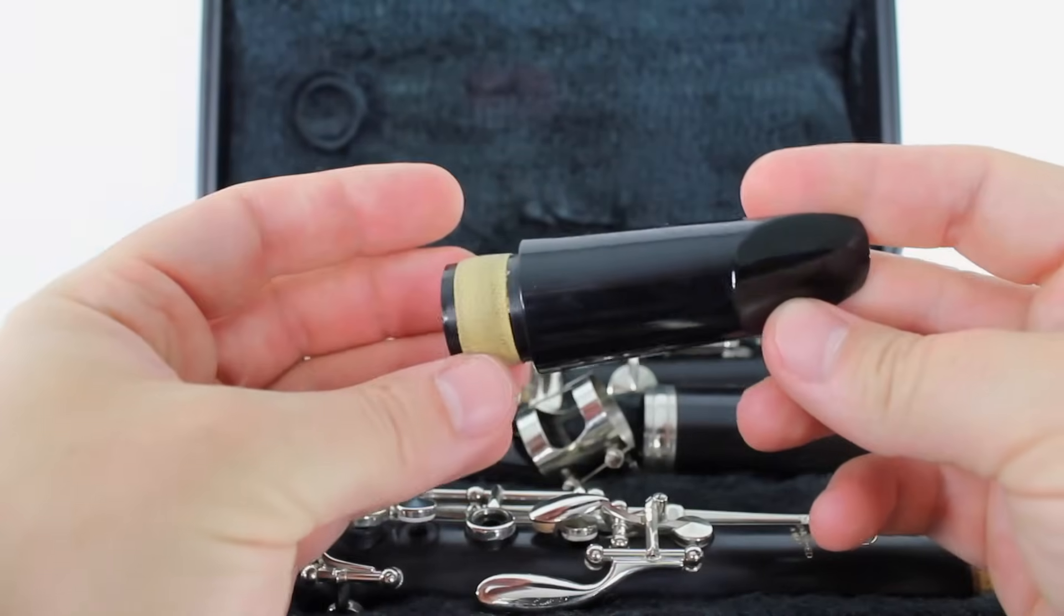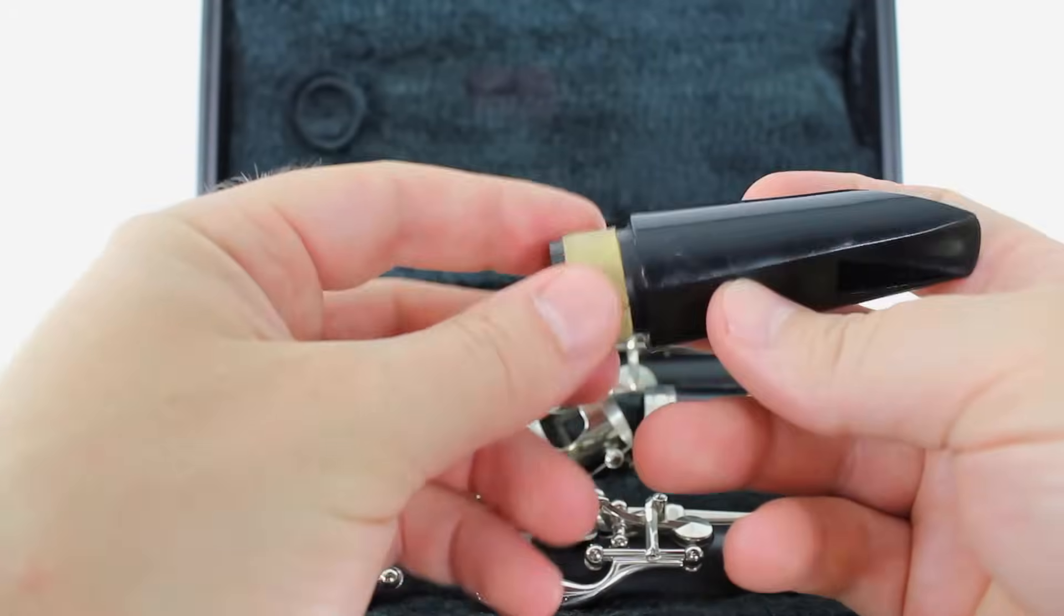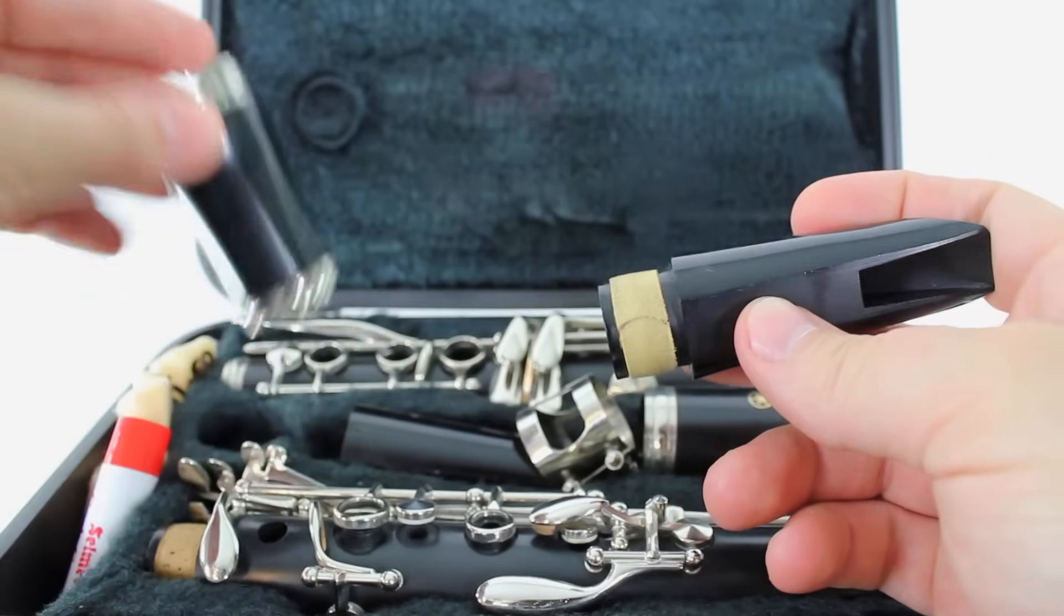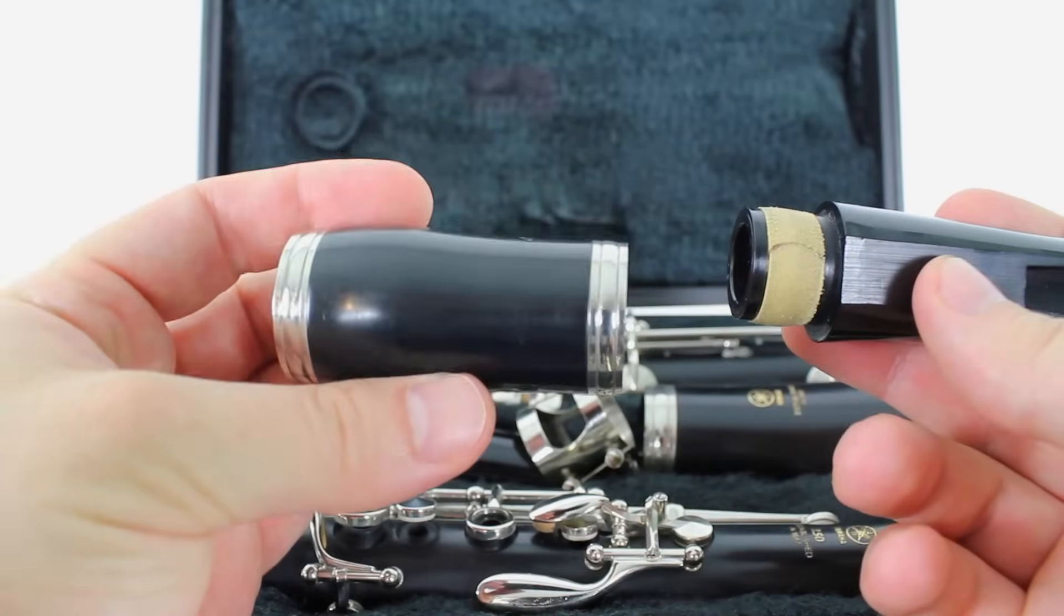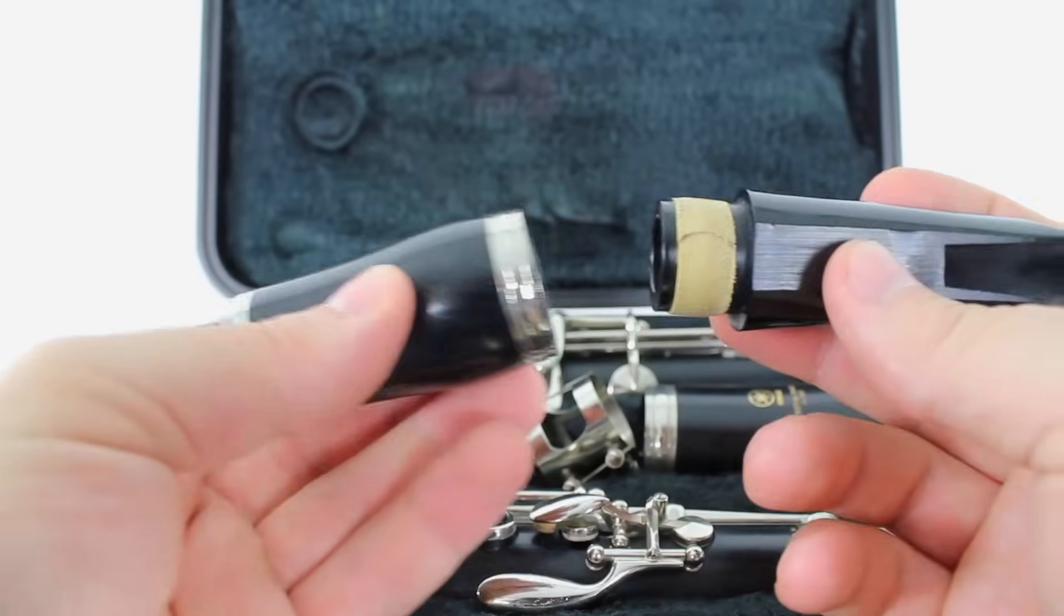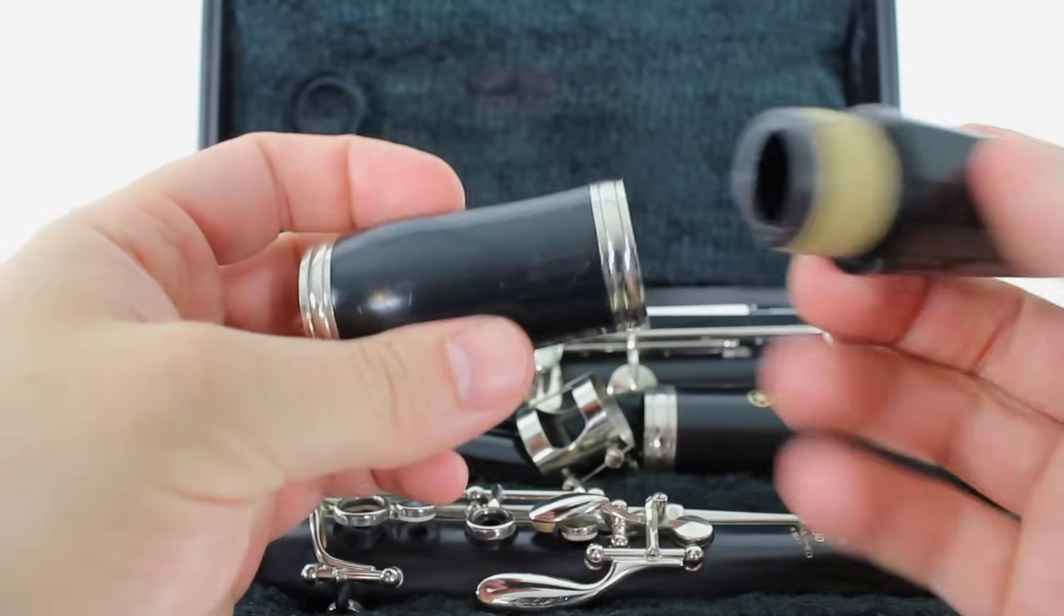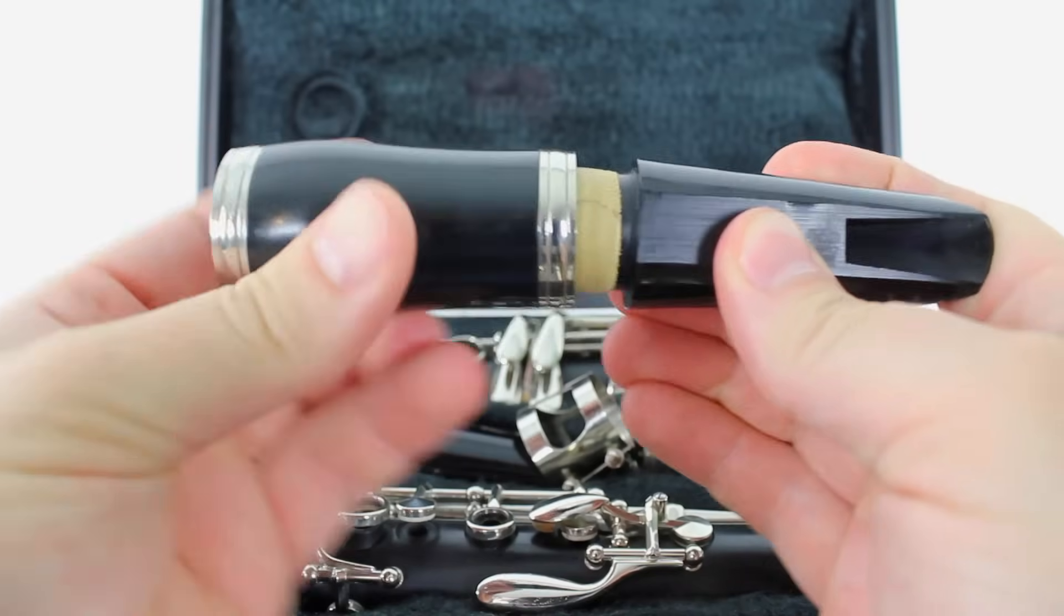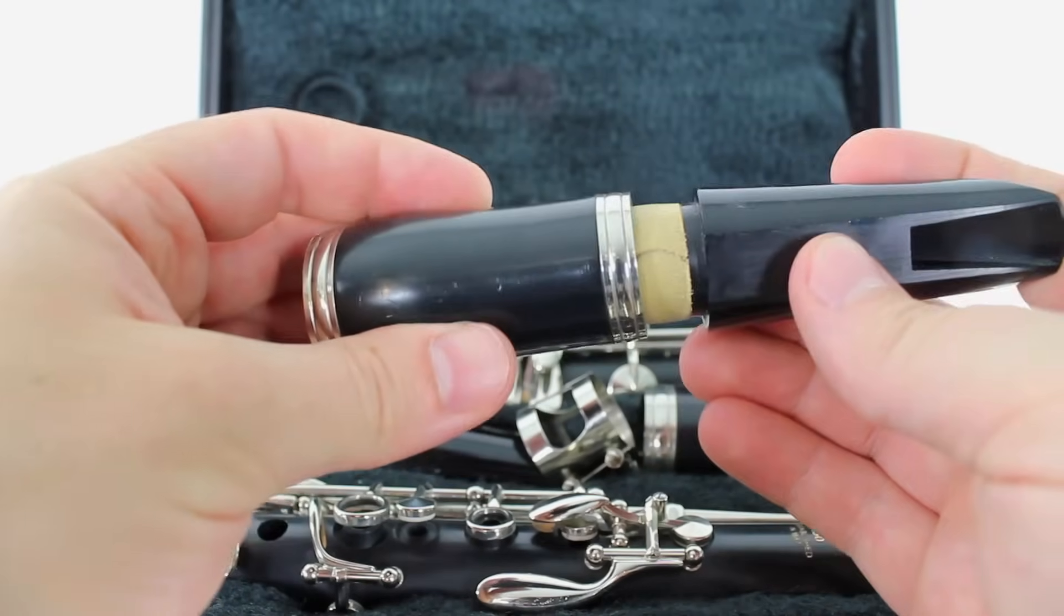Here we have our clarinet mouthpiece. And you can see one end has a hole, and this end has a hole but it has cork around it. We're going to pick up the barrel and we're going to attach the mouthpiece to the barrel. The barrel has two ends. It has a smaller end and it has a big end. We want to put the mouthpiece into the smaller end of the barrel. And you can tell this will be just about barely fitting and this will be really loose. We want to go into the smaller end.